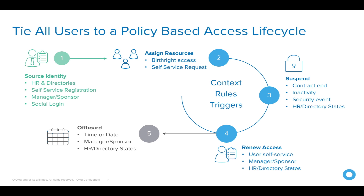You've got the notion of birthright access, which is applications that everyone should get. And then you also have a separate set of applications that you might get on a request basis. In step three, you have to determine when the account will get suspended. If you're a contractor, your account might get suspended at the end of your contract, or it might get suspended after maybe 30, 60, or 90 days of inactivity.